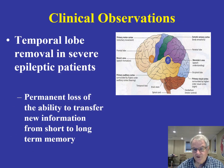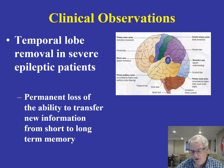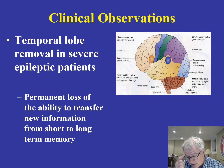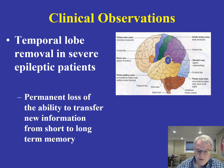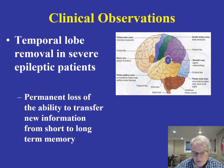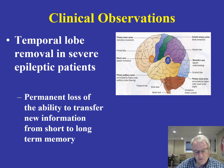A second area of support comes from clinical observations of epileptic patients who have had their temporal lobes removed. This is a last-resort procedure to prevent future grand mal epileptic seizures. As a consequence, individuals permanently lose the ability to transfer new information from their short-term memory into their long-term memory. Their long-term memory is fine, but that transfer of new information from short to long-term memory has been impaired — more support for two separate memory mechanisms.